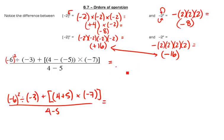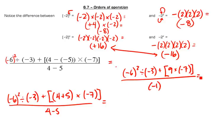I continue to work in my brackets. So I have negative 6 squared divided by negative 3. Plus, in my brackets, I have 4 plus 5 is 9, times negative 7. And because my denominator is on the bottom, I can work on that separately. So 4 minus 5 is negative 1.